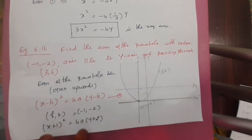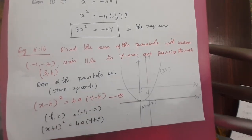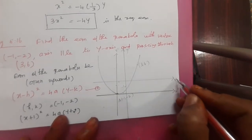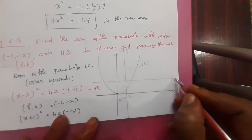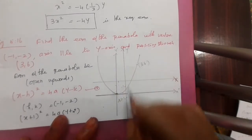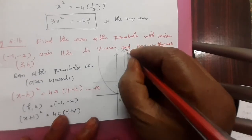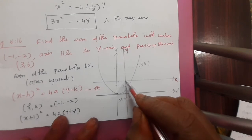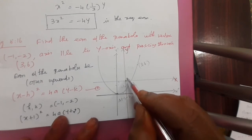When the vertex is given as minus 1 comma minus 2, first draw the x-axis and y-axis. Then plot the vertex: x-axis value minus 1, y-axis value minus 2. So the point minus 1 comma minus 2 is the vertex. The parabola is not passing through the origin. The axis is parallel to the y-axis.